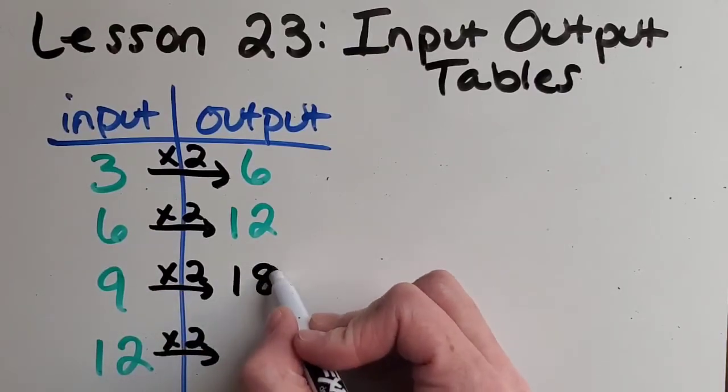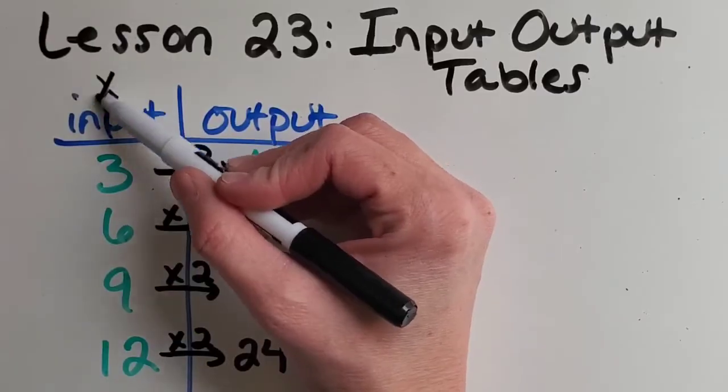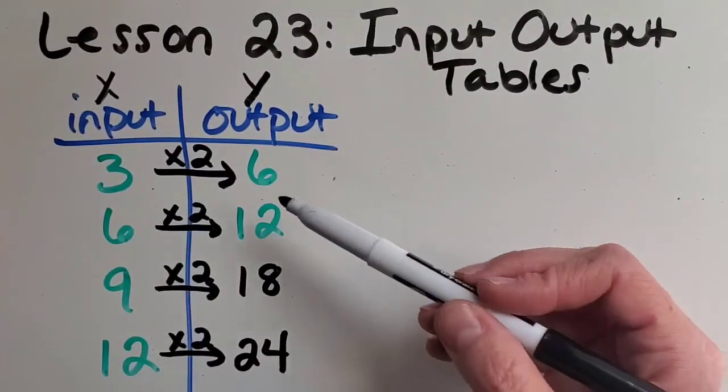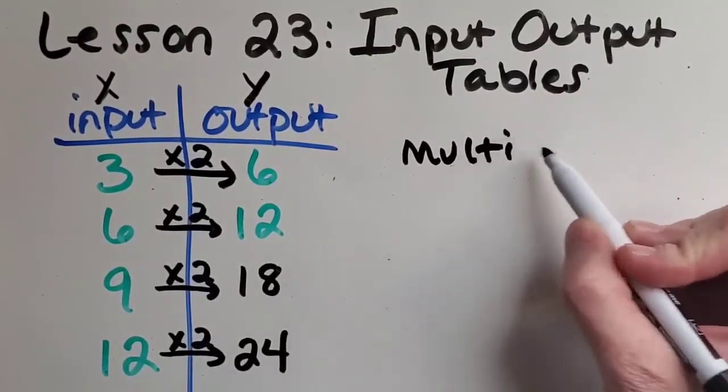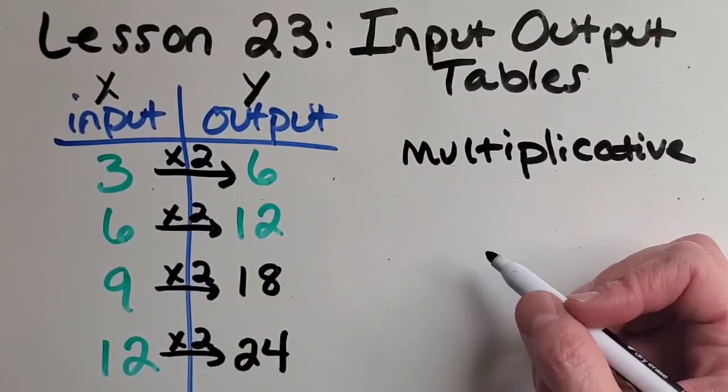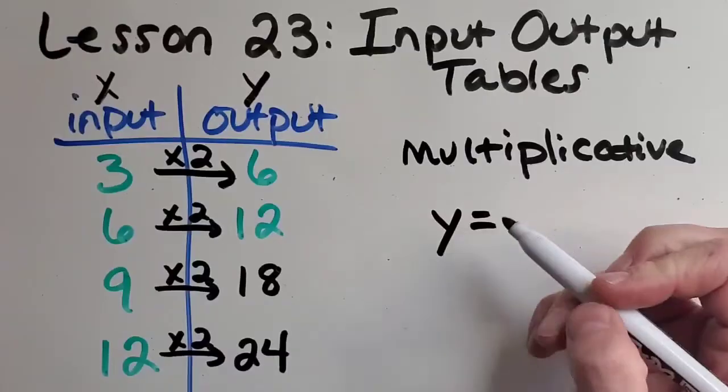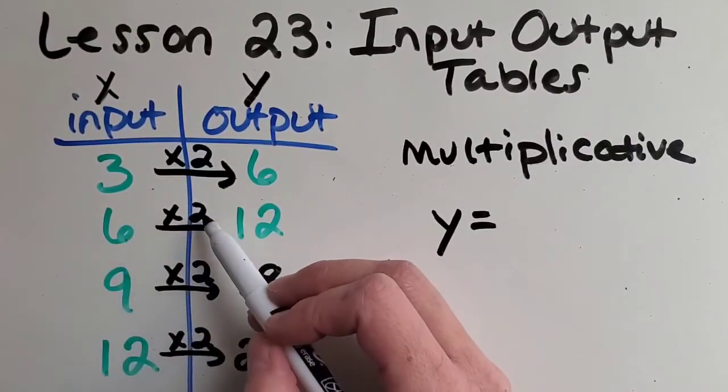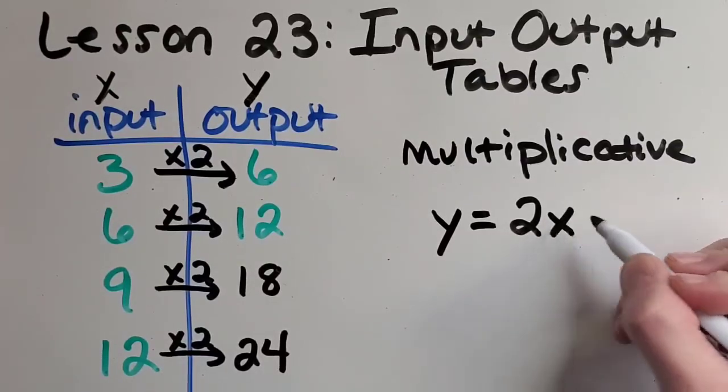Nine times two is eighteen. Twelve times two is twenty-four. And let's remember that the input are my x amounts. The output are my y amounts. Before we write our equation, did you figure out if this was multiplicative or additive? What do you think? Great. It's multiplicative because it's got the times two. Can you try this one out? See if you can write a good equation that has the times two in it. Let's check your work. So, I'm saying that anything in the y side is going to always equal the x times two. But, I'm going to write it a little differently because it looks a little better when you have the number first, and then the x. Two x.